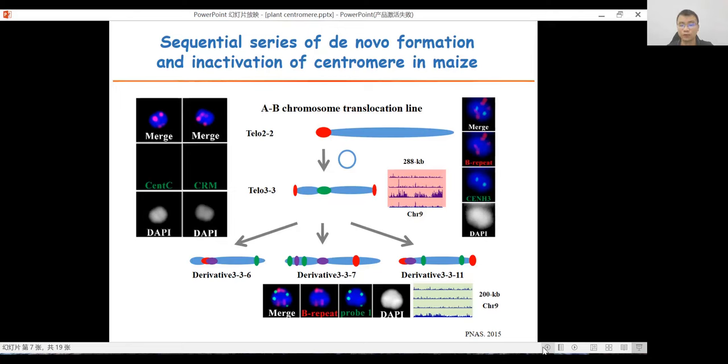We performed centromere ChIP-seq and identified a 288-kilobase region on the short arm of chromosome nine that binds with centromere nucleosomes. However, sequences from this region were not located in the primary constriction of three further derivatives, and a new centromere may form elsewhere on each chromosome. One 200-kilobase region on the short arm of chromosome nine was involved in de novo centromere formation in derivative 3-3-11. This result suggests that chromosomes undergoing rearrangement displayed a sequential series of de novo formation and inactivation of centromeres in maize.